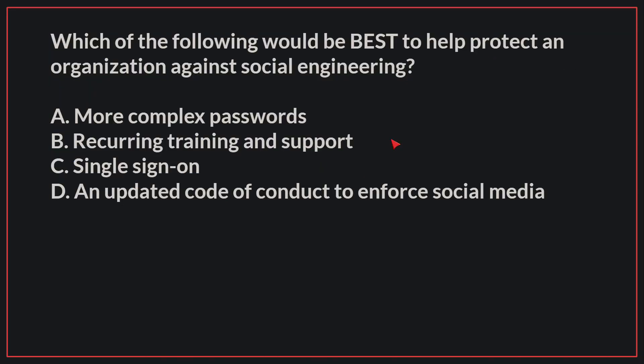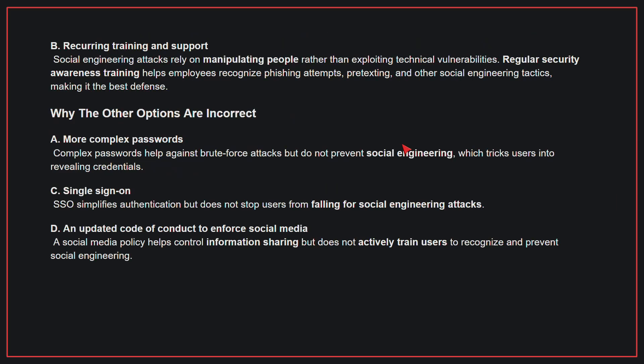Which of the following would be best to help protect an organization against social engineering? The correct answer is B, recurring training and support. Social engineering attacks rely on manipulating people rather than exploiting technical vulnerabilities. Regular security awareness training helps employees recognize phishing attempts, pretexting, and other social engineering tactics, making it the best defense.